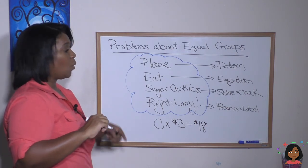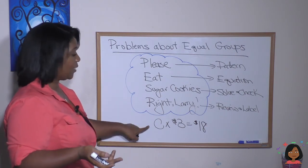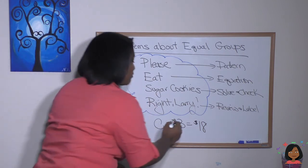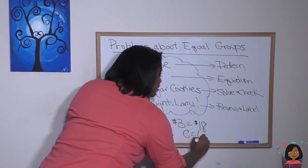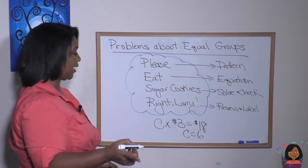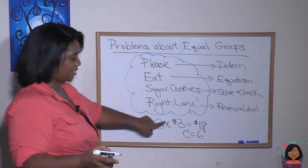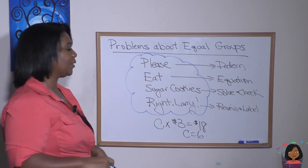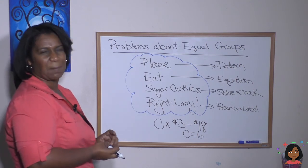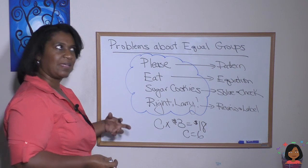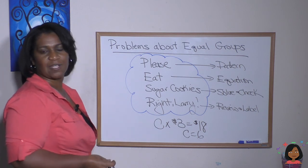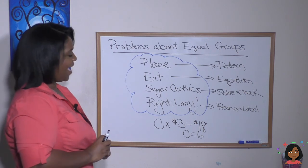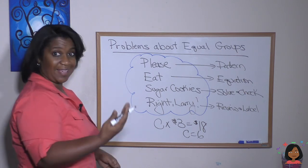Now we can solve and check: what times 3 equals 18? We're going to divide 18 by 3, and we know that 18 divided by 3 is 6, but we're going to check it — 6 times 3 equals 18. Let's review and label: does it make sense that I bought six candles? Each candle cost me $3, so total I spent $18. That sounds about right. And our label would be candles.